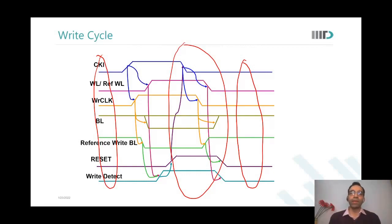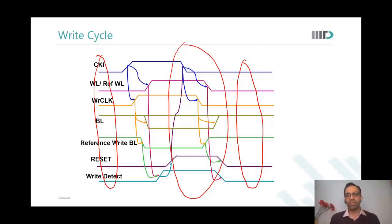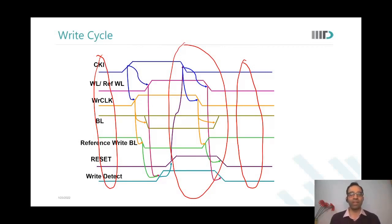When generating the internal clock, we want something else. The memory read and write operation can be very slow, meaning you want to keep the word line on for a significant amount of time. The remaining reset operation can happen very, very fast. So the low period of the clock need not be very high. The memory requires a very long high period and a very small low period of the clock.